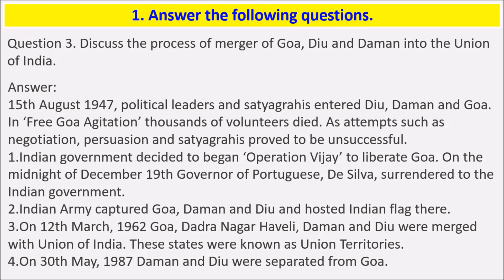Question 3: Discuss the process of the merger of Goa, Diu and Daman into the Union of India. On 15 August 1947, political leaders and Satyagrahis entered Diu, Daman and Goa. In the Free Goa agitation, thousands of volunteers died. Attempts such as negotiations, petitions and Satyagraha proved to be unsuccessful. The Indian government decided to begin Operation Vijay to liberate Goa. On the midnight of December 19, the Governor of Portuguese, Di Silva, surrendered to the Indian government. The Indian army captured Goa, Daman and Diu and hoisted the Indian flag there. On 12 March 1962, Goa, Dadra and Nagar Haveli, Daman and Diu were merged with the Union of India. These states were known as Union Territories. On 30th May 1987, Daman and Diu were separated from Goa.